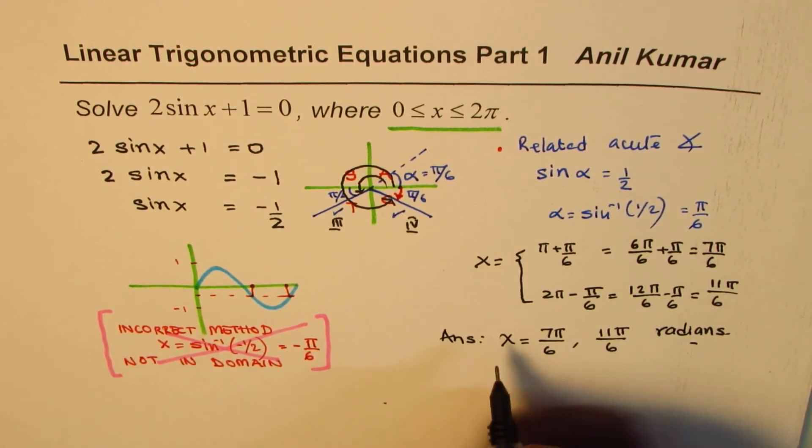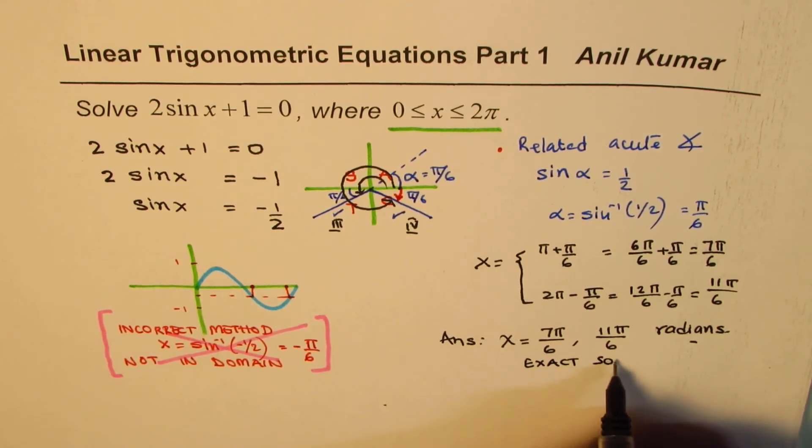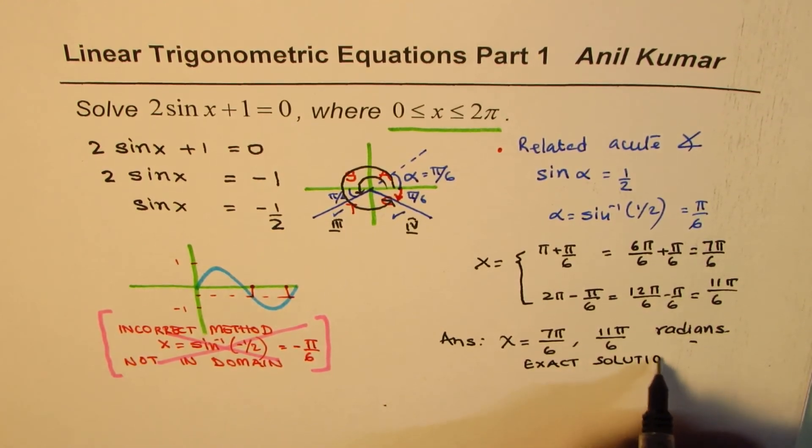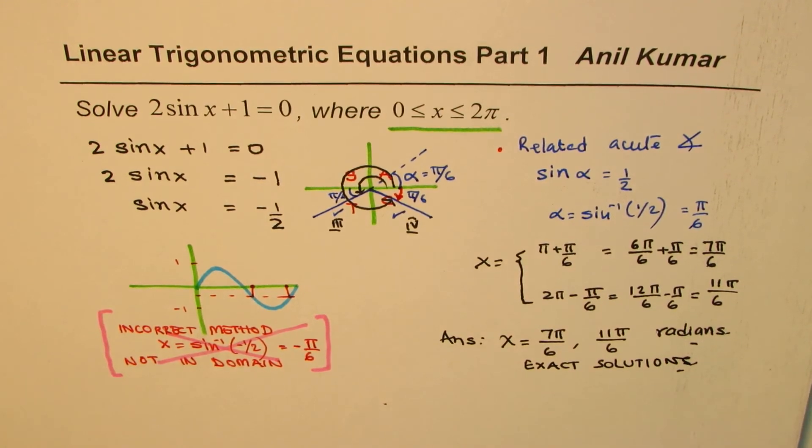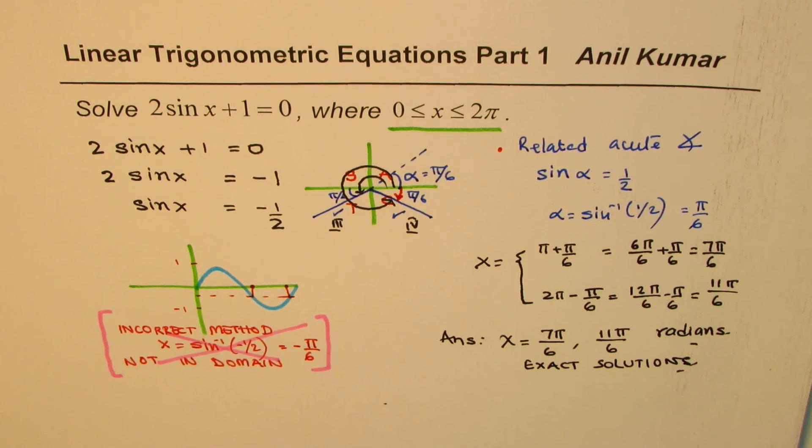Now these are also the exact solutions. At times, you may be required to write down to round to two decimal places. Then you can always write this in fractions using π as a number 3.14 and get your answer. I hope that helps. You can always subscribe and share my videos. Feel free to post questions. Thank you and all the best.